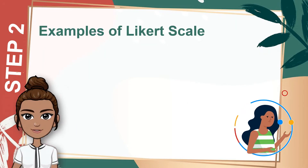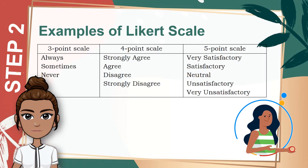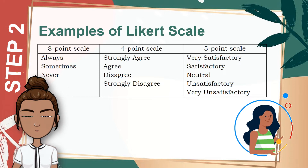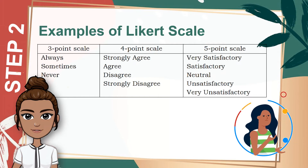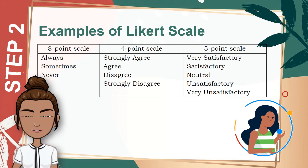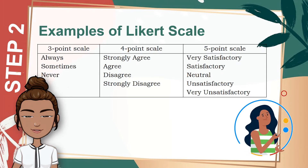Here is an example of the Likert scale. For the 3-point scale, we have: always, sometimes, never. For the 4-point scale: strongly agree, agree, disagree, and strongly disagree. For the 5-point Likert scale, we have: very satisfactory, satisfactory, neutral, unsatisfactory, and very unsatisfactory.